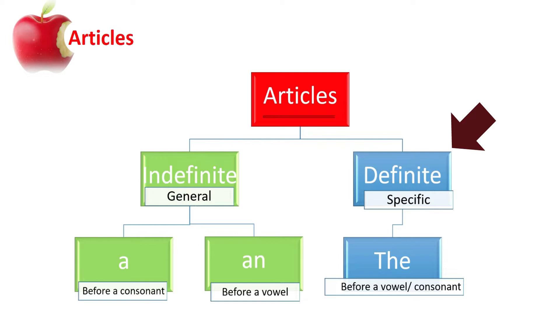The indefinite article has two forms: 'a', which comes before a consonant, and 'an', which comes before a vowel. As for 'the', which is the definite article, this comes before both vowels and consonants.